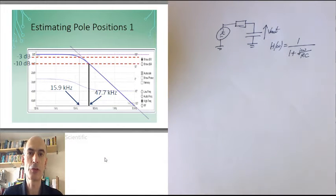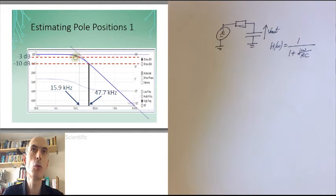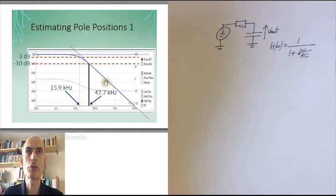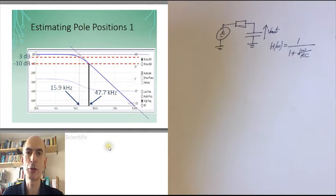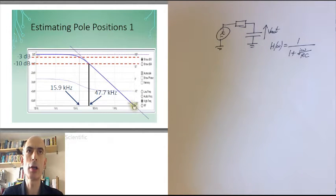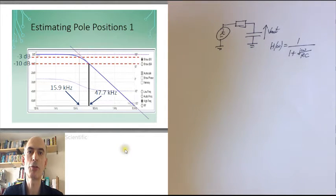As we've seen before, the break frequency of the pole is where the low frequency asymptote and the high frequency asymptote meet. So in cases like this, the simplest way to do it is just put a ruler along the low frequency line, a ruler along the high frequency line, and where those two lines meet, that is the break frequency of the pole.